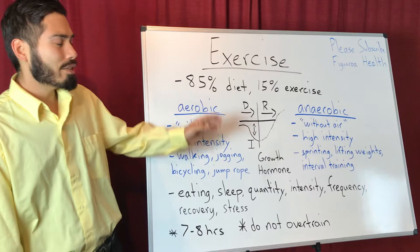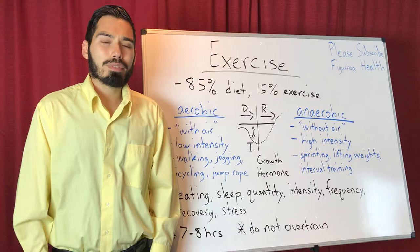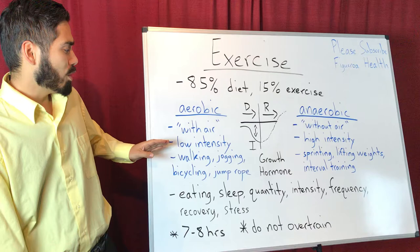So there are two types of exercise. One of them is aerobic exercise, meaning that it's with air. So essentially your body is producing energy with oxygen, and it's also known as low intensity training as well. Some examples are walking, jogging, bicycling, and jump roping.